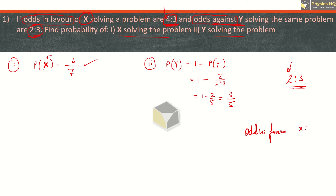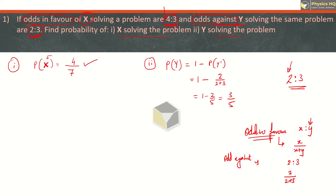Remember: odds in favor of x is to y means the probability in favor is x upon x plus y. So if odds in favor are 2 is to 3, probability is 2 upon 5. For odds against, the probability of the complement is the first number upon the total — so 3 upon 2 plus 3, which is 3 upon 5. I hope that is clear.